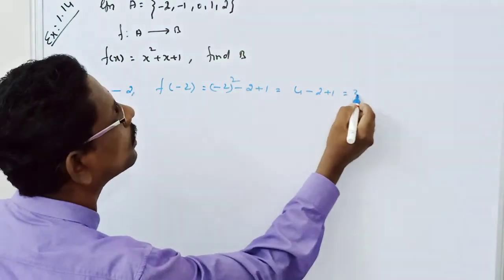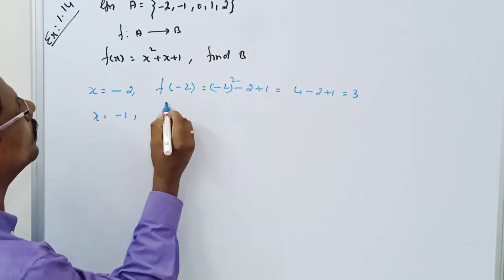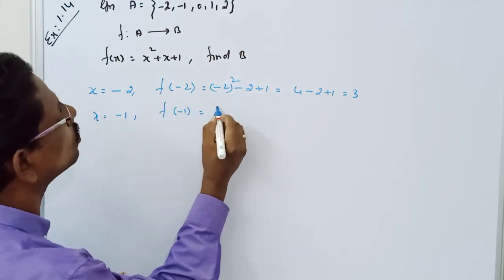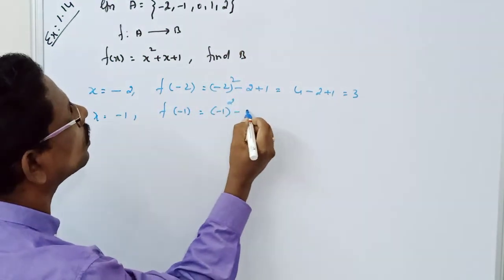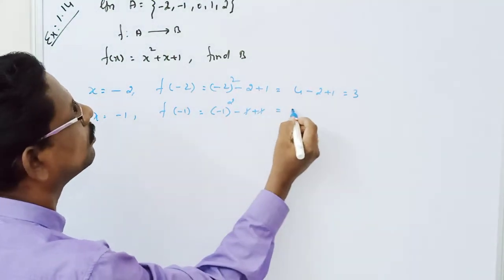When x is equal to -1, f(-1) is equal to (-1)² + (-1) + 1. That's 1 - 1 + 1, which cancels to give us 1.